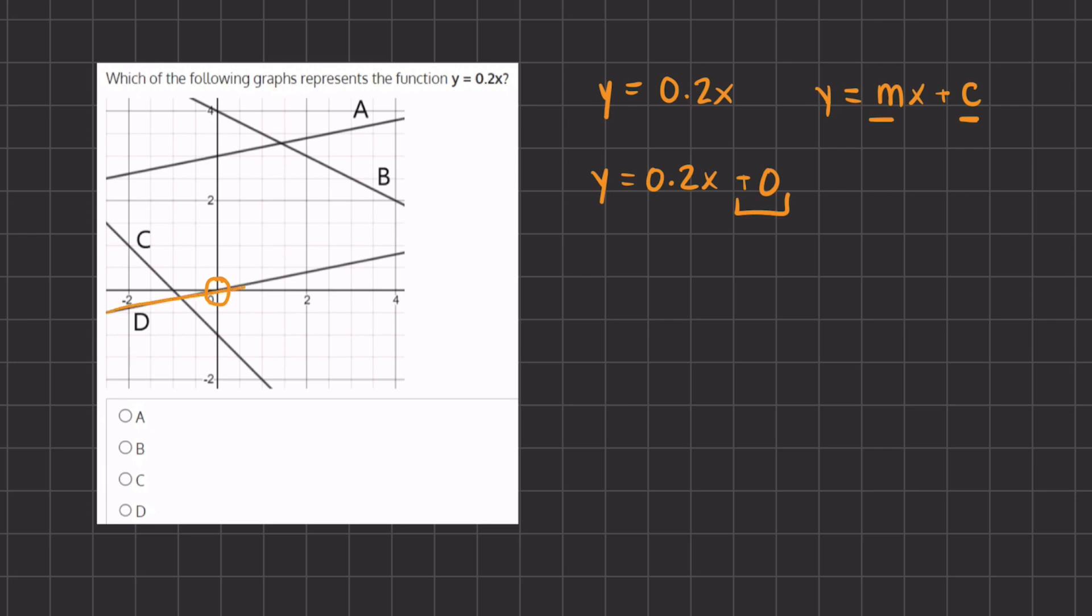And therefore, line D, this line right over here, crosses the y-axis at 0 and represents the correct line. Therefore, the final answer will be D.